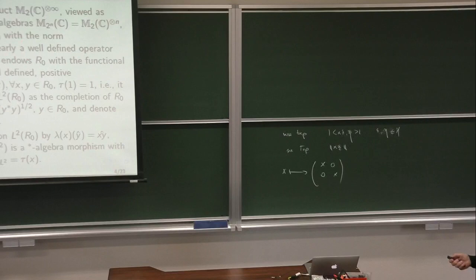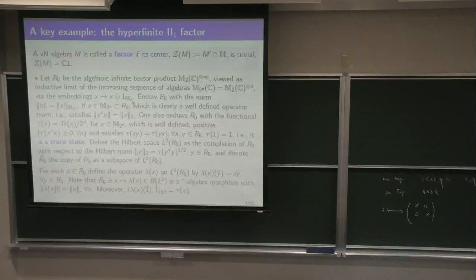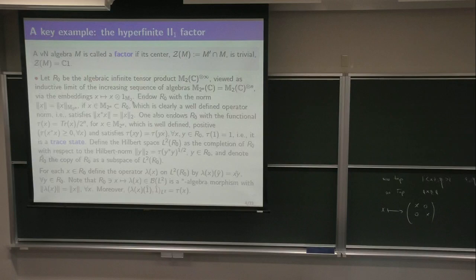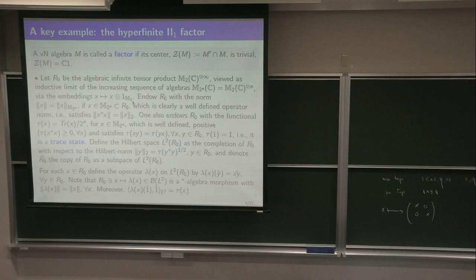We endow R₀ with the norm: each x is in some 2ⁿ matrix algebra, and you take its operator norm there. These are isometric, so if you go to a larger m where x lies, it will be the same operator norm. Therefore you have a well-defined norm satisfying the operator norm axiom — it's a Banach algebra norm — and the norm of x star equals the norm of x. Our star operation is the adjointness when acting on the Hilbert space; more generally a star operation is anti-linear, inverts the order of operations, and satisfies (x*)* = x.